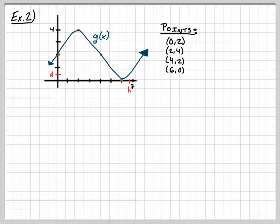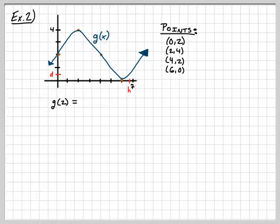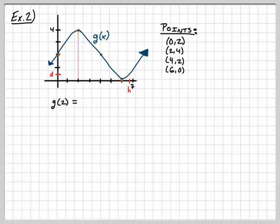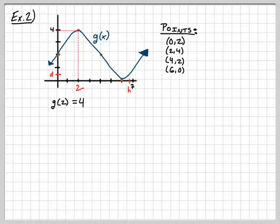My first question about this graph: what is g of 2? Can you read the graph? Instead of g of x, you plug in 2 for x. On the x-axis at 2, trace up to the curve and read the y-axis. What corresponds with an input of 2? It looks like the output is 4. So g of 2 equals 4.